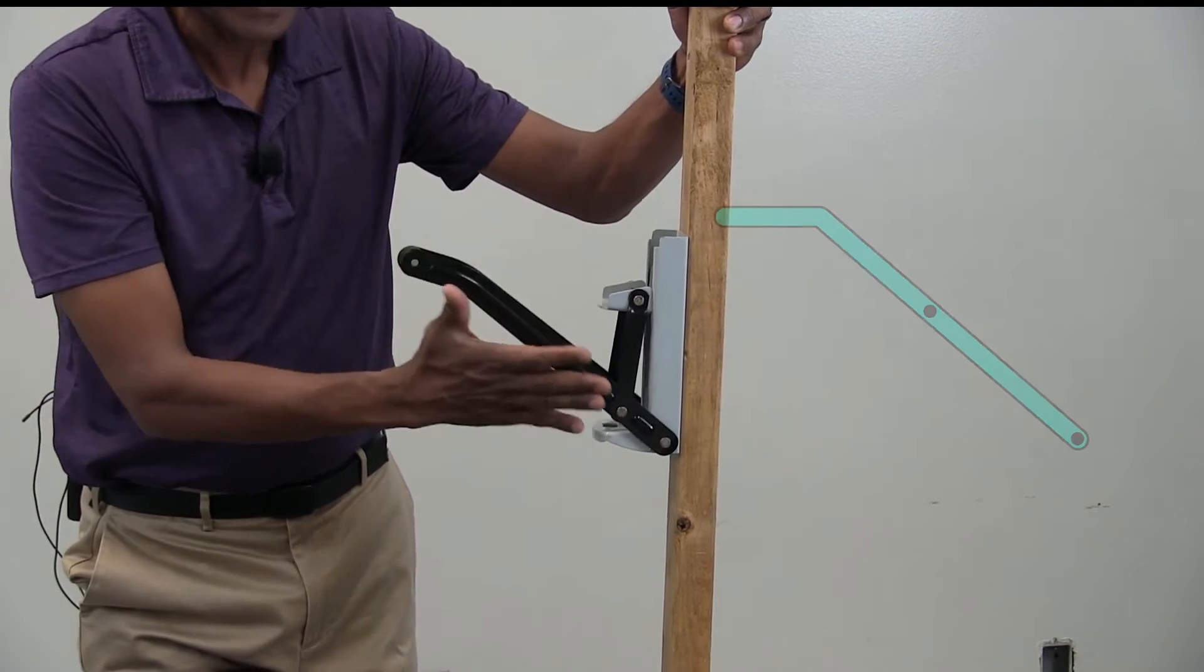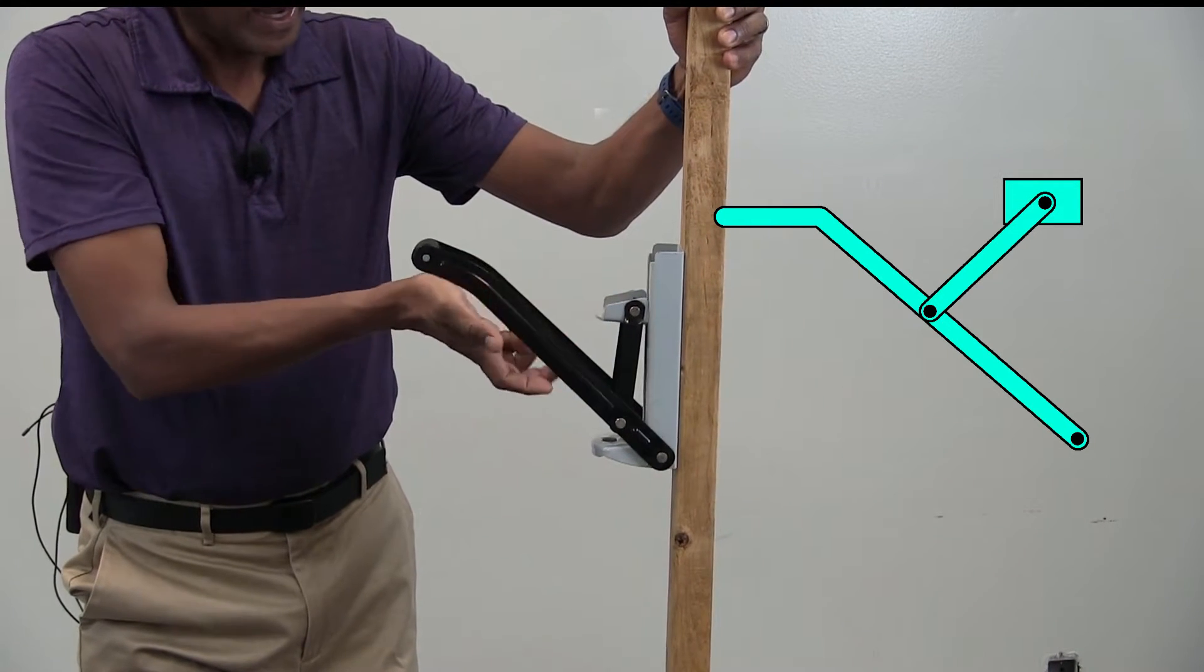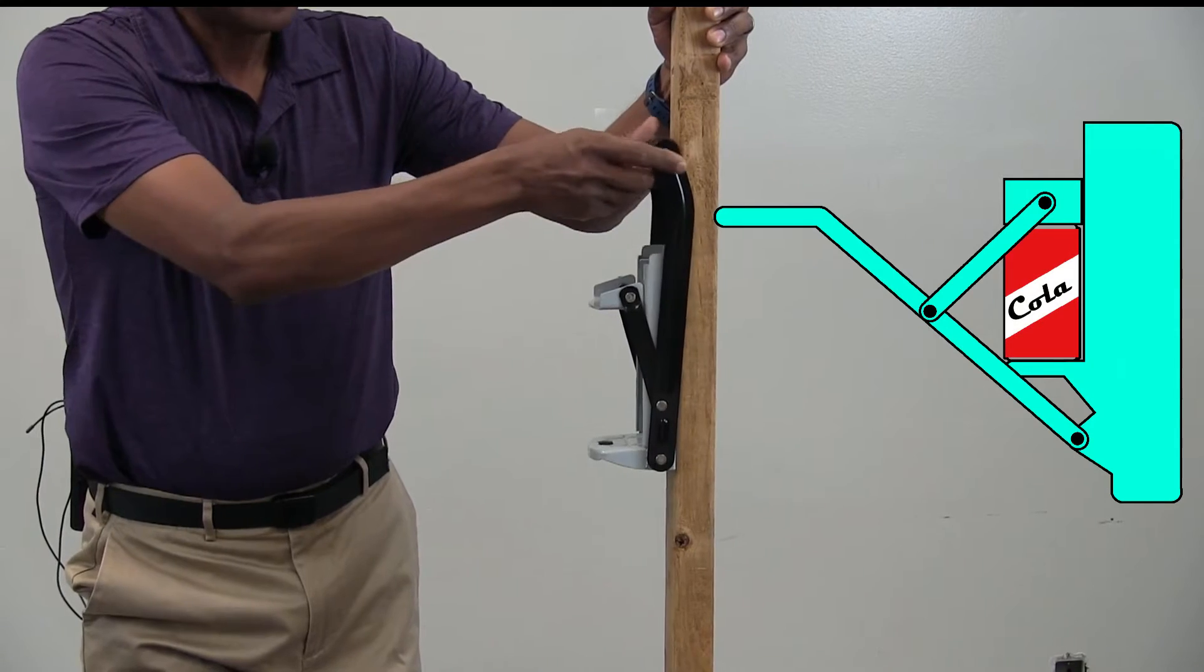So this can crusher is very similar to the nutcracker. Take a look at it. Here is a handle connected to an intermediate link to a slider. And in this space, you place the can.